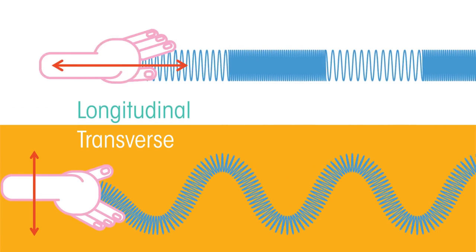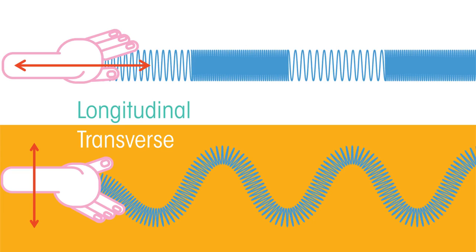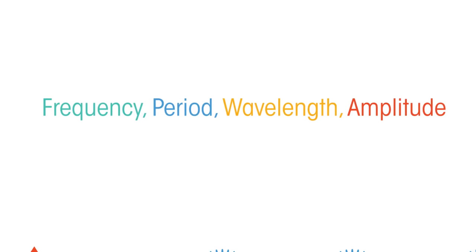There are two types of waves, which we look at in more detail in another video but the basic features are the same. These four words describe different properties of waves, let's discover what each one means.